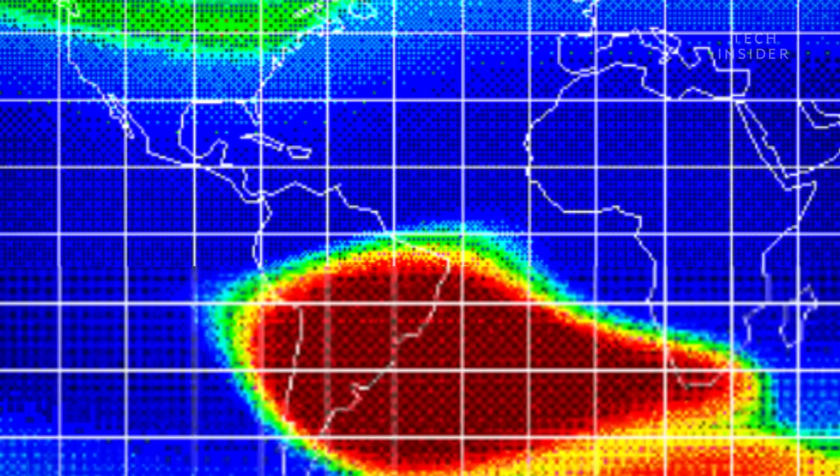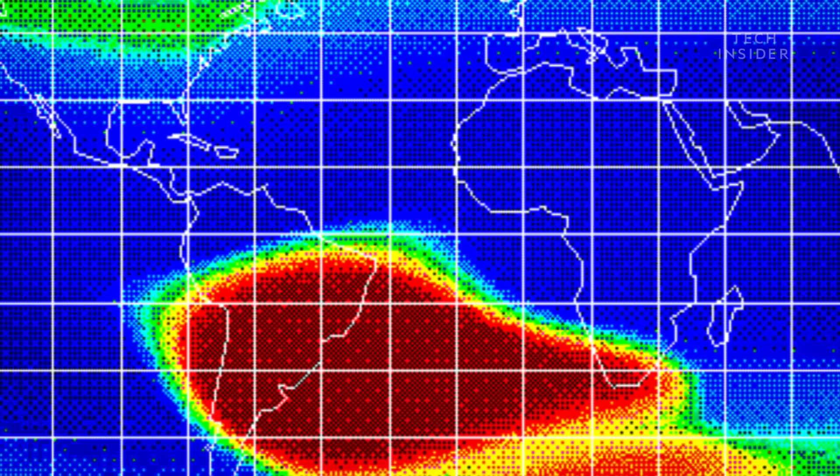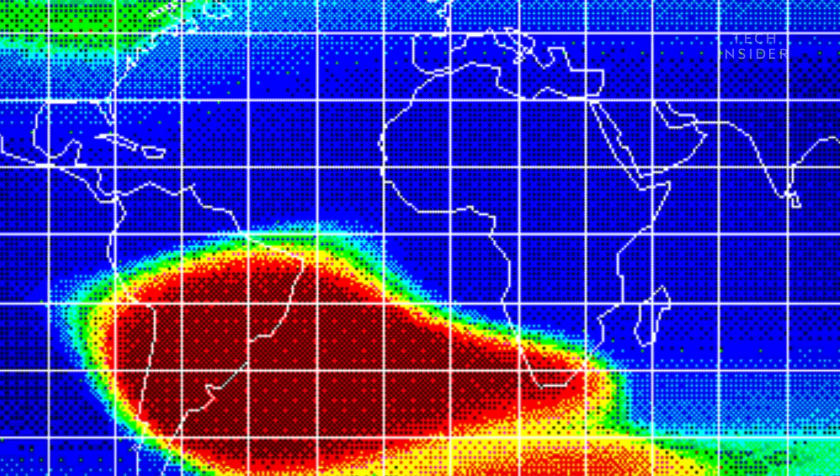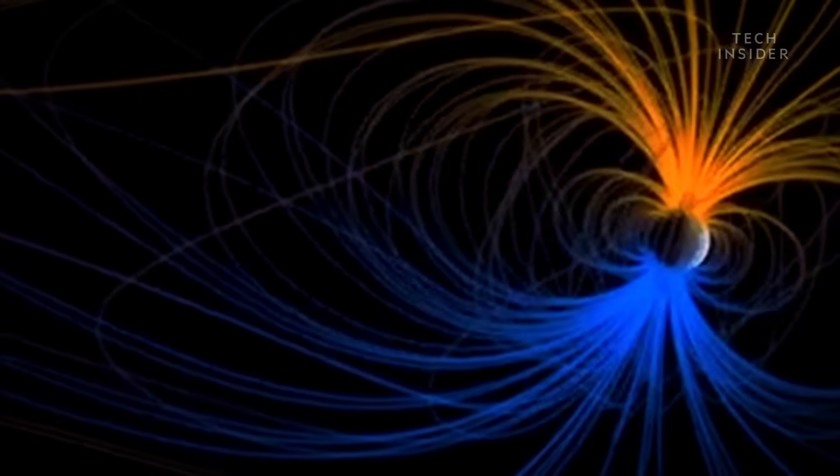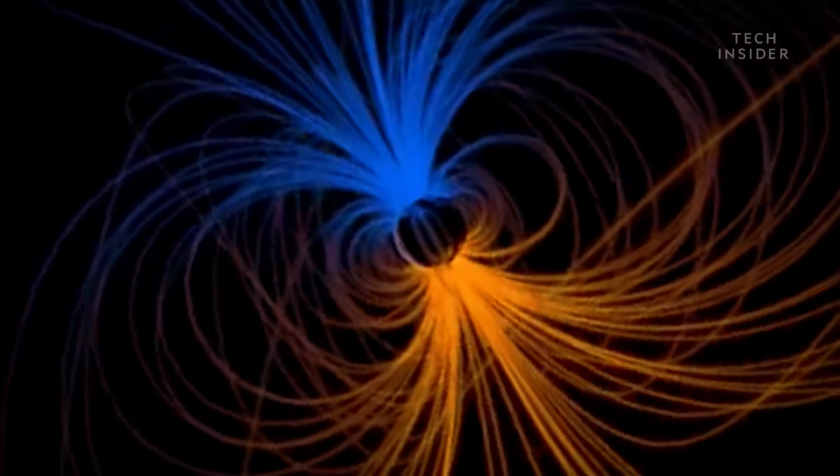Since experts started measuring the anomaly a few decades ago, it has grown in size and now covers a fifth of Earth's surface with no signs of shrinking anytime soon. This is so extreme that it could be a sign we're on the brink of a polar flip, or we may already be in the midst of one.